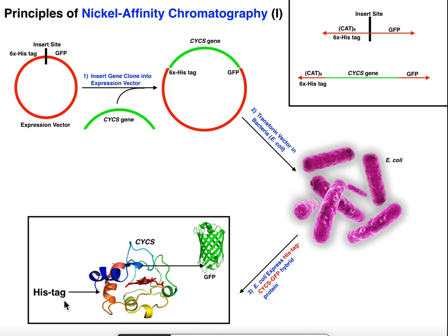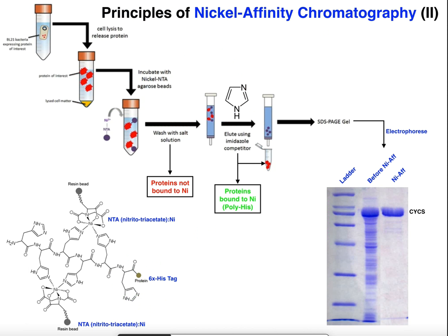So what is a histag? A histag is a segment of usually about six histidine residues. Histidine is an amino acid and you can put six of them in a row on usually the N-terminal end or the C-terminal end of a protein. Here you can see six histidines on the protein — that's the 6x histidine tag.